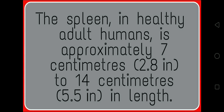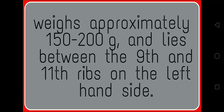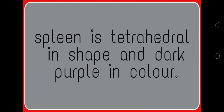The spleen in a healthy adult human is approximately 7 cm to 14 cm in length. It weighs approximately 150 to 200 grams and lies between the 9th to 11th ribs on the left hand side. The spleen is tetrahedral in shape and dark purple in color.